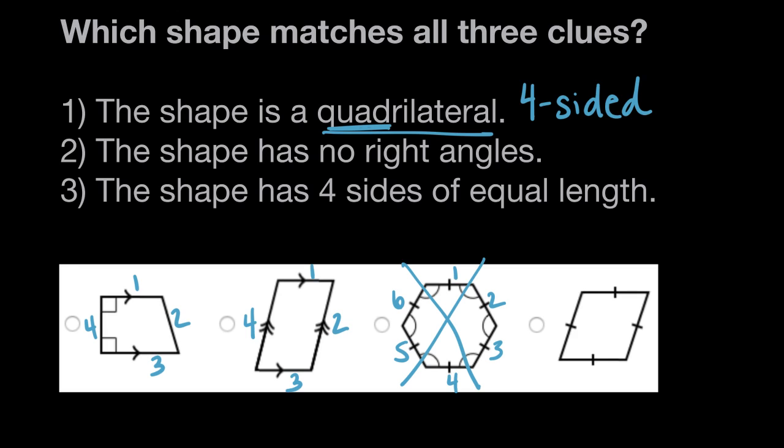And finally, shape four has one, two, three, four sides again, so it is also a quadrilateral. So after clue one, we still have three possible answers. This first shape, the second shape, and the fourth shape all match clue one. They are all quadrilaterals.